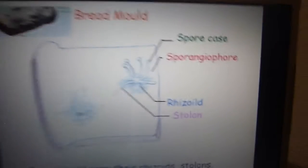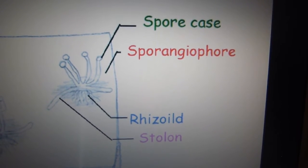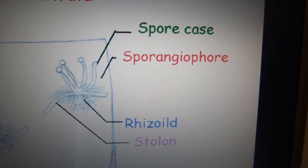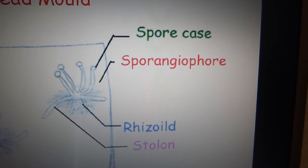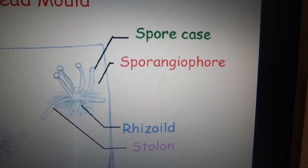Bread mold grows their rhizoids, stolons, spore cases, and spore flags.